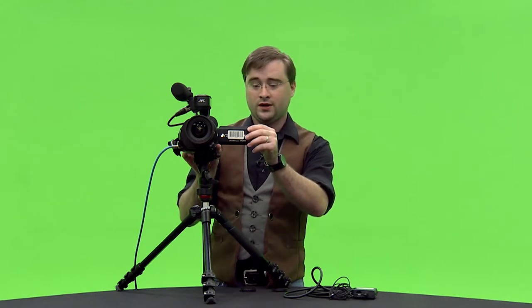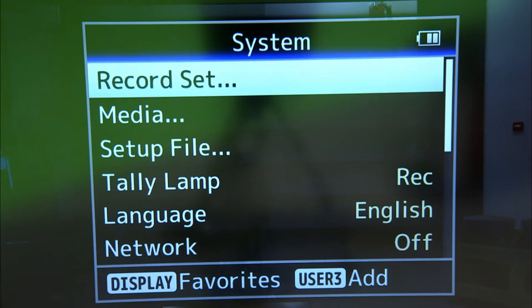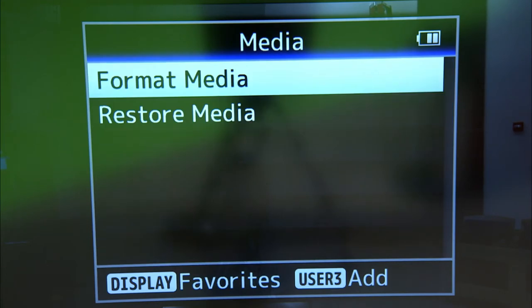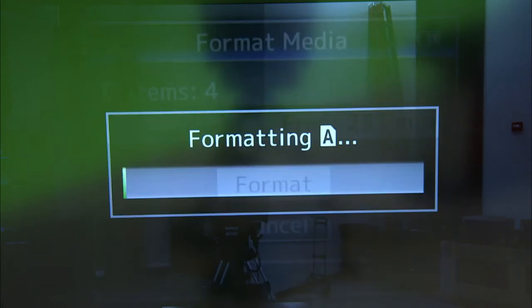From there go ahead and hit the menu button. Scroll down to system, media, format media, format slot A, format.